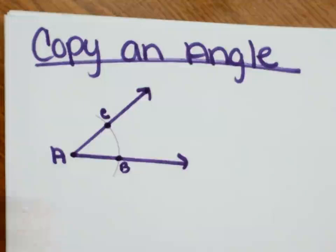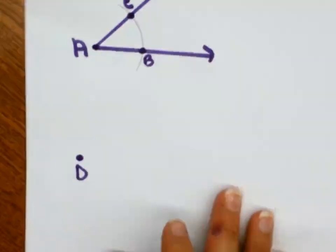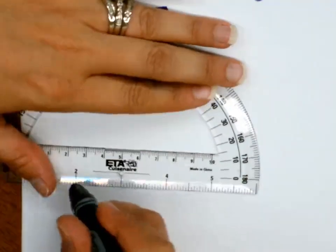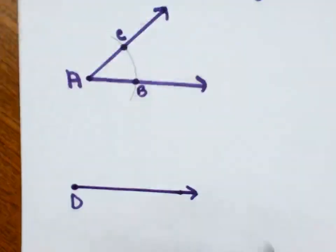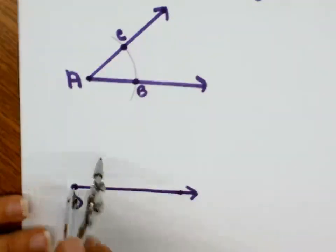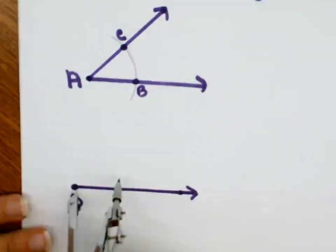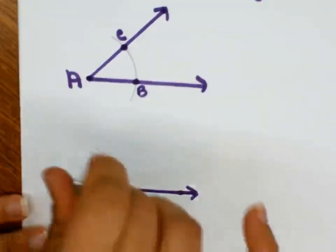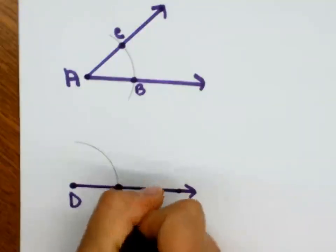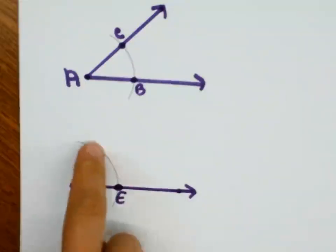So now, on my copying my angle, first thing I'm going to do is I'm going to make one of the legs. Then I'm going to take my compass and I'm going to keep it open to the same amount that I did here. Put the sharp part on the D and make that same arc. Okay, so now I know where this point goes. I know where point E goes. But I don't know where point F goes, right?